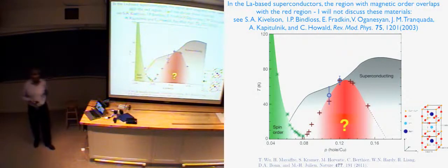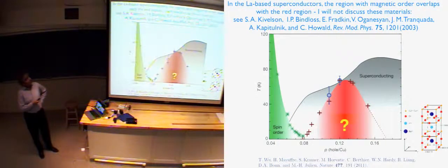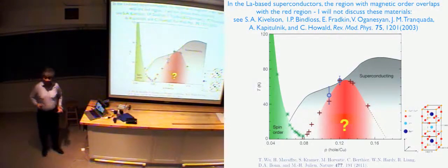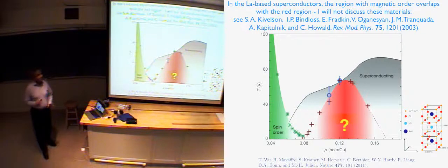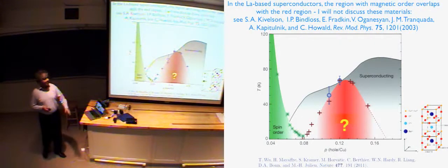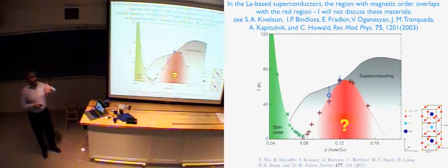One caveat for the experts: there is a lot of work on mysterious states in this range of hole density, much of it based on lanthanum-based superconductors. They are somewhat different — they have lower TCs, and in particular the green and the red regions overlap with each other, which makes them more complicated. It's better to focus on all the other superconductors where I can forget about the spin order. I'll focus on YBCO, BISCO, and really all the others with the highest TCs, where this red region really seems to be well separated from the region of spin order.